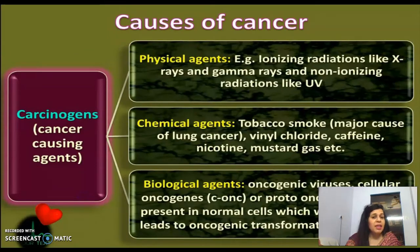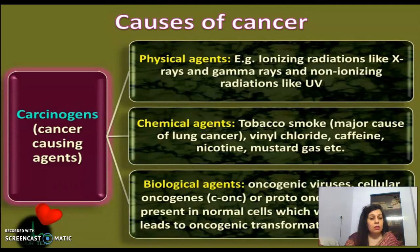There are different causes of cancer. We divide them into physical agents such as gamma rays and non-ionizing radiation; chemical agents like tobacco smoke, vinyl chloride, caffeine, nicotine, and mustard gas; and biological agents including oncogenic viruses, cellular oncogenes, and proto-oncogenes.